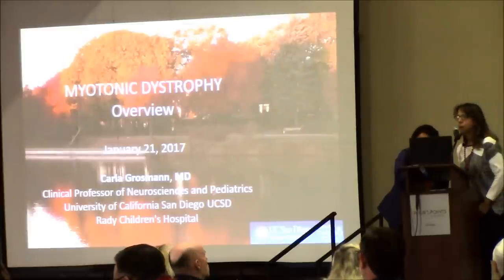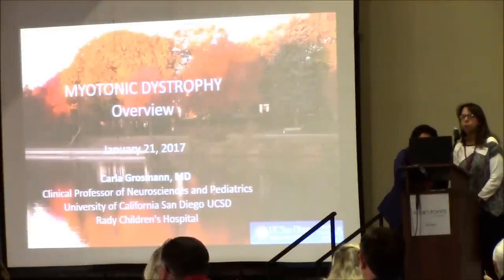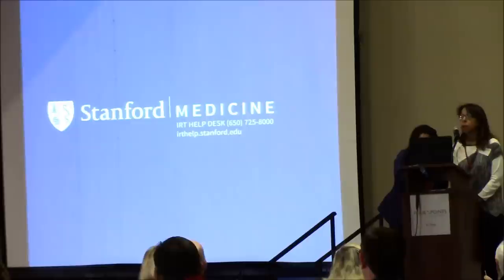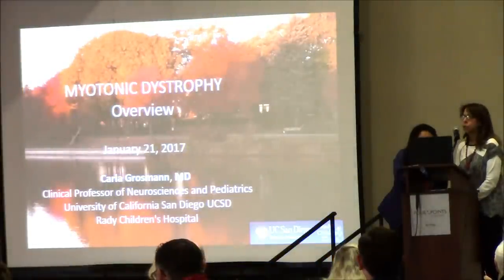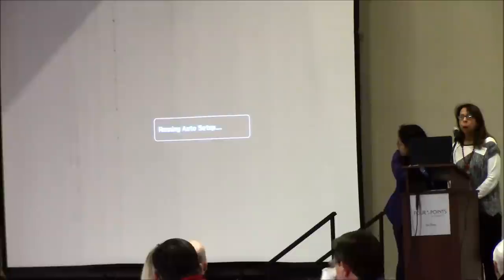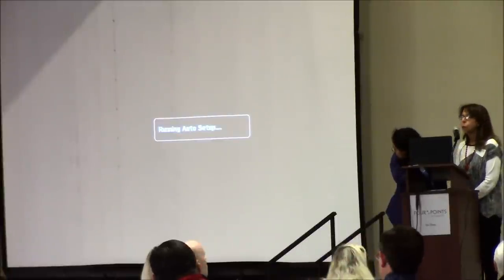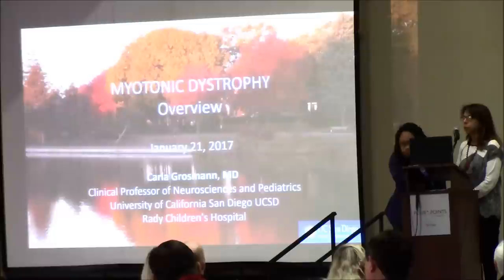If someone were to ask you what is muscular dystrophy, the answer would be: muscular dystrophy is not one condition but a group of inherited conditions. Myotonic dystrophy is one type of muscular dystrophy, and it's probably the most common adult form of muscular dystrophy.